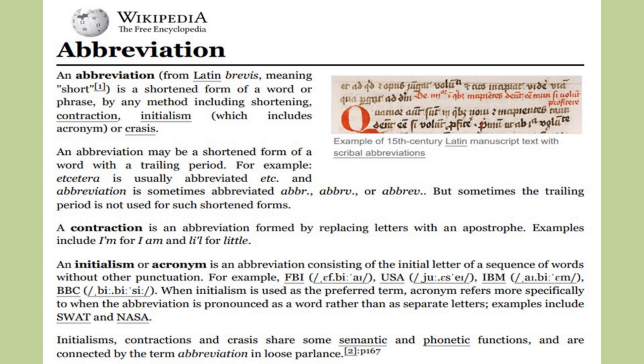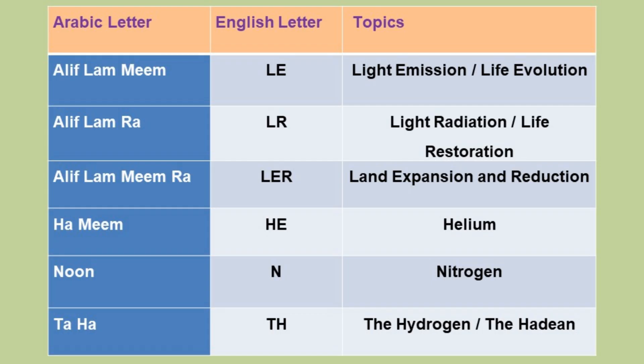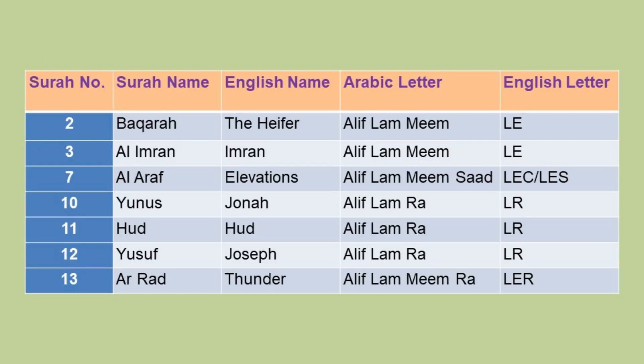Similarly, LR stands for Light Radiation or Life Restoration; HE stands for Helium; N stands for Nitrogen; LER stands for Land Expansion and Reduction; and TH stands for the Hadean or Hydrogen respectively. Instead of explaining like this, let me show you this in the form of a table for all 29 chapters which have these abbreviations.